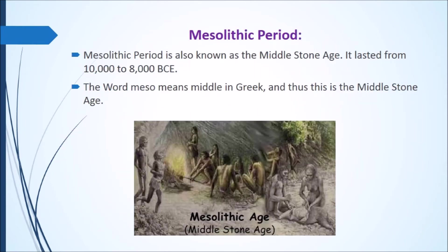The Mesolithic period — in Greek, the word 'Meso' means Middle, so the Mesolithic period is also known as the Middle Stone Age. This Mesolithic period lasted from 10,000 to 8,000 BCE. It was the period between the Paleolithic and Neolithic periods.